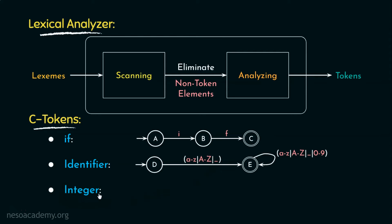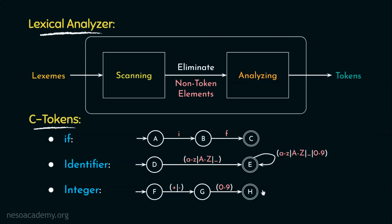For integers, starting from the initial state F, if we see a positive or negative sign we move to state G, and from there seeing any digit from 0 to 9 we end up in the final state H. This is sufficient for single-digit integers. For two or more digits, there is an epsilon transition from H back to G, allowing any number of digits. Additionally, since the positive sign is implied, there is an epsilon transition from the initial state F directly to G to handle unsigned integers.